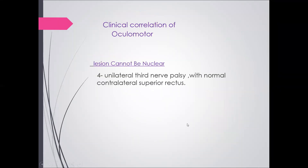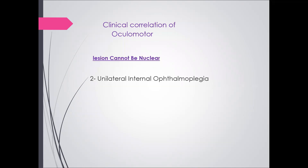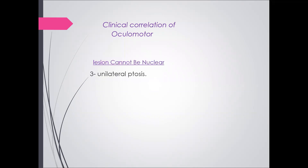A lesion cannot be nuclear if we have unilateral third nerve palsy with normal contralateral superior rectus — because the superior rectus is crossed, so look at the other eye and check it. A lesion also cannot be nuclear with complete third nerve palsy in only one eye, or unilateral ptosis alone — because the caudal central nucleus produces bilateral ptosis.